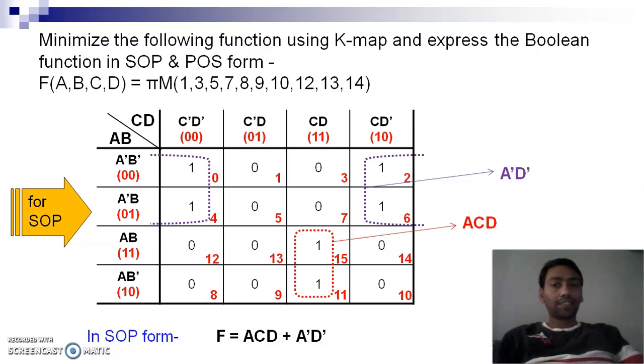So this is clear to all. Where we have min terms, we write ones. Where we have max terms, we write zeros. If we have to find POS expression, we do pairing of zeros. If we have to find SOP expression, we do pairing of ones. Is it clear to all? Thank you for watching this video.